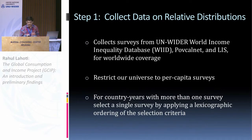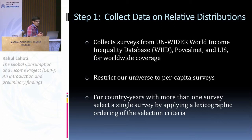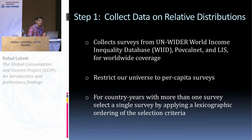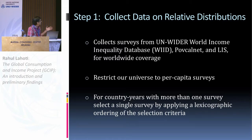Our current data sources are UNUI, WID, POVCALNET, and LIS, though we are open in principle to data from other sources. A restriction we place is that we restrict our universe to per capita surveys, which have the benefit of being easy to understand and having a counterpart in GDP, though the downside is they do not account for economies of scale. For country-years where we find multiple surveys, we apply a lexicographical ordering using Canberra Group recommendations and our own measures to get a single survey for every year.